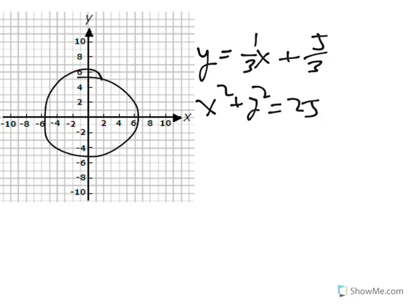And the circle is x squared plus y squared equals 25. So our circle, since it's 0, 0, has a radius of 5. This one-third x plus five-thirds, well, it seems like it crosses it twice. But in order to find where it crosses, we can substitute in place of the y here.